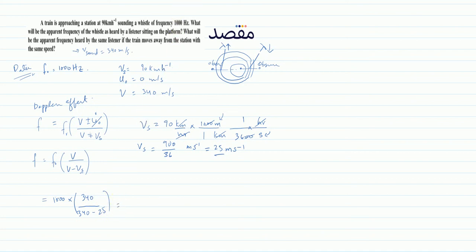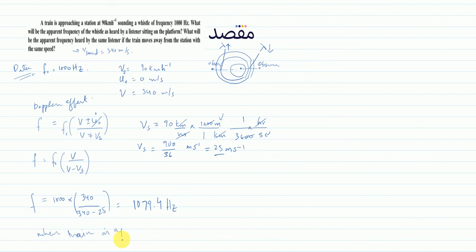So putting vs = 25 in the formula, the answer comes out to 1079.4 hertz — because frequency is measured in hertz. So when the train is actually approaching towards the listener, the apparent frequency will increase.